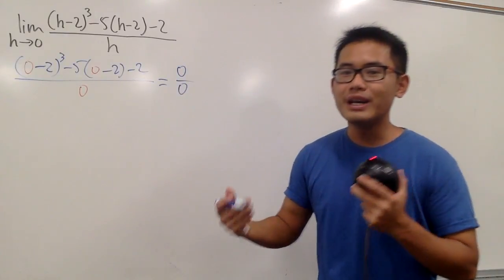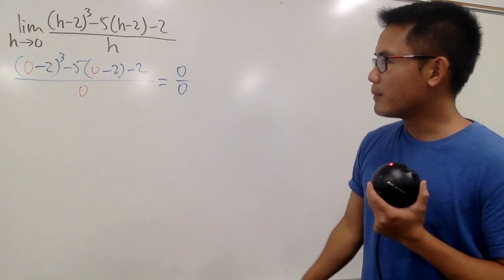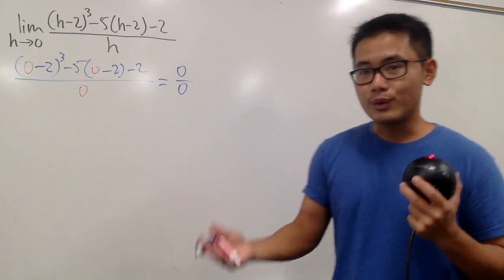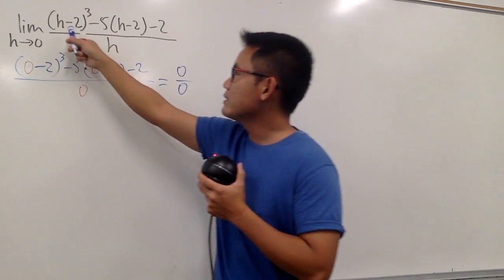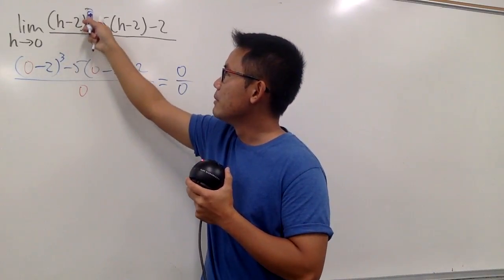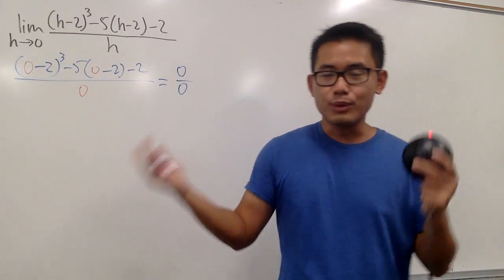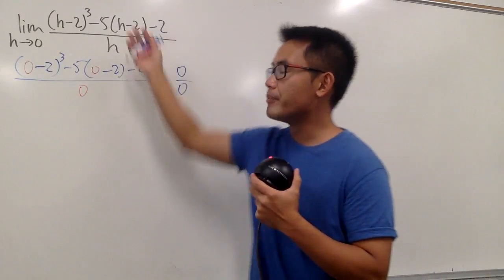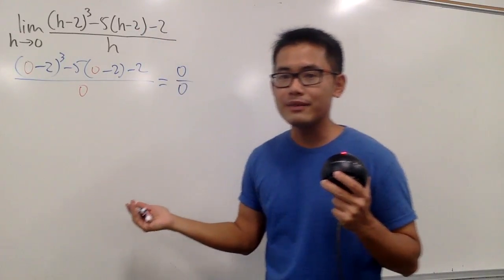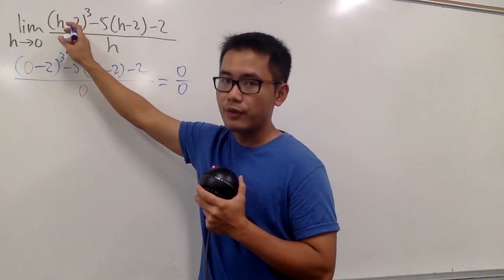See? 0 over 0 — we have to do more work. What kind of work can we do though? Notice we have this big exponent. Let's just multiply out and then combine the terms on the top to see what we have. So let me work this out for you guys.